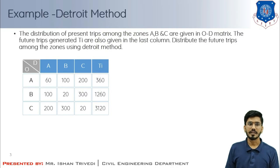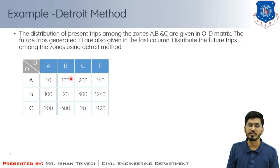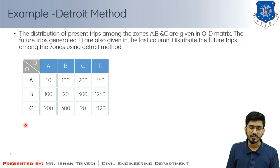The trip distribution of present trips among zones A, B, and C are given in the OD matrix. The future trips, denoted as capital Tij, are given in the last column. We need to distribute the future trips among the zones using the Detroit method. The columns represent destinations and the horizontal values represent origin values. The futuristic trip values given are row summations, and since we have futuristic production we similarly have futuristic attraction values in the vertical direction.